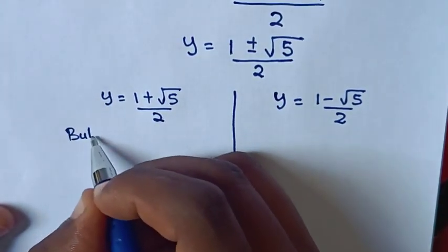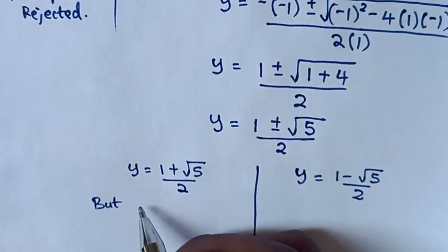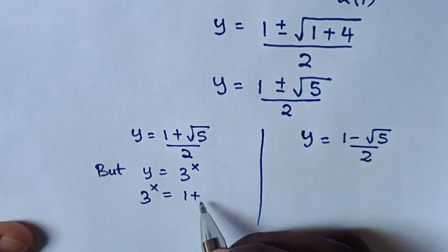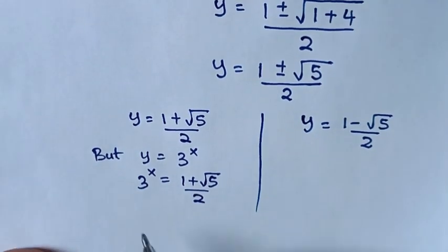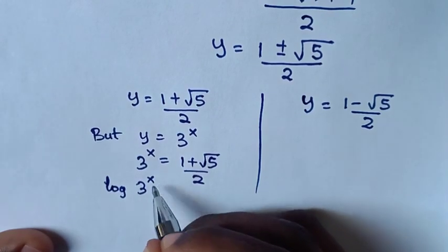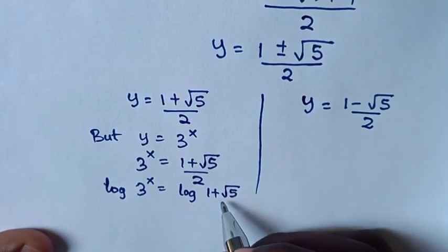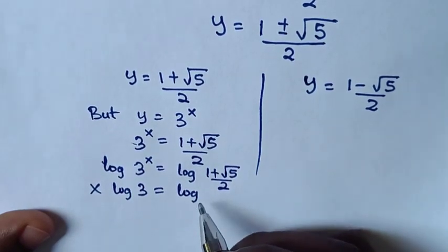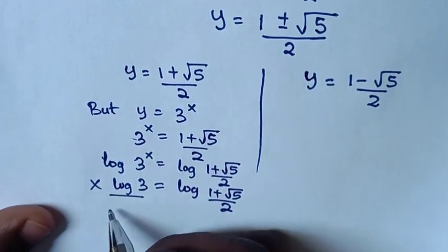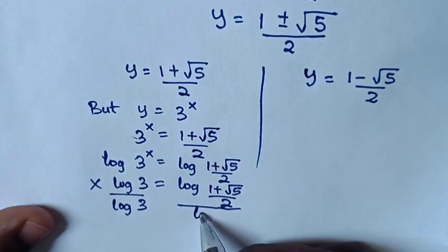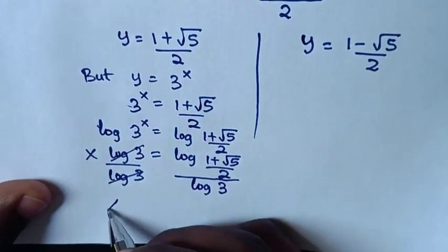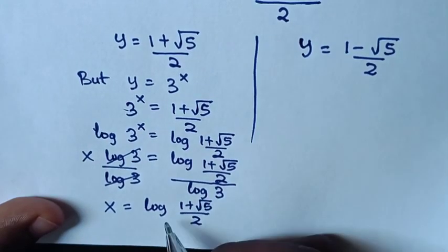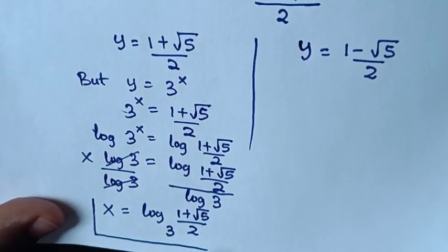Remember that y equals 3 power x. Comparing with the first solution, 3 power x equals (1 plus root 5) over 2. We apply log to both sides: log 3 power x equals log of (1 plus root 5) over 2. The power x moves to the front: x log 3 equals log of (1 plus root 5) over 2. Dividing both sides by log 3 gives x equals log base 3 of (1 plus root 5) over 2.